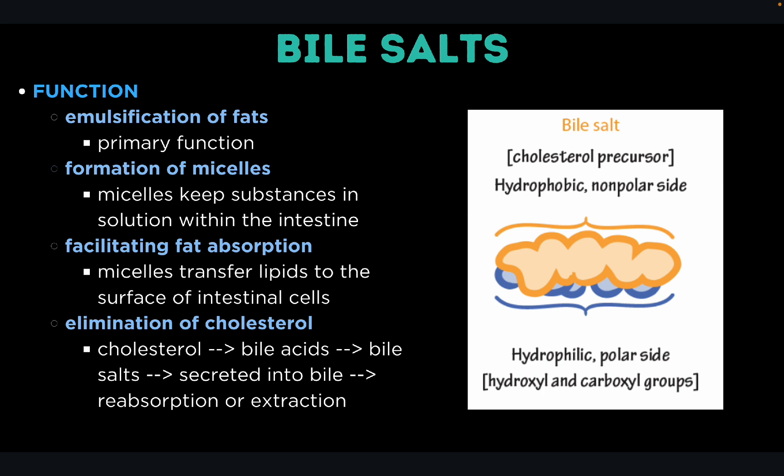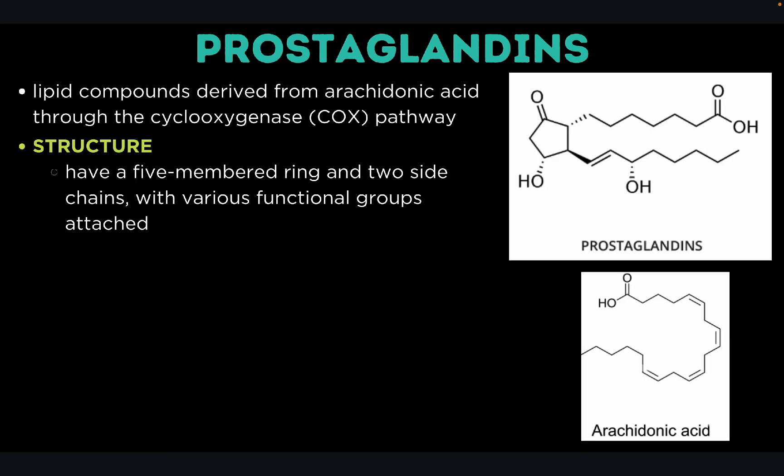Once micelles are formed, fat absorption occurs as they transfer lipids to the surface of intestinal cells where lipids are absorbed into the bloodstream. Without bile salts, the absorption of dietary fats and fat-soluble vitamins would not happen. Bile salts also play a role in eliminating excess cholesterol from the body — cholesterol is converted into bile acids and then bile salts in the liver, secreted into bile, and can either be reabsorbed in the intestine or excreted in feces.